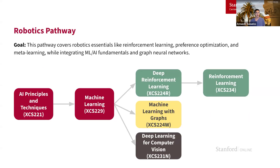Next, we have our robotics pathway — a pathway that specializes in understanding many of the algorithms powering robotics. We always recommend starting by strengthening your AI/ML fundamentals with XCS 221 and XCS 229. But if those are already ingrained, you can jump into the Deep Reinforcement Learning course XCS 224R and our Reinforcement Learning course XCS 234, which is more applied to understand algorithms for robotics and control-based planning. After those, you can supplement your robotics knowledge with graphs and vision — a great combo if you want your robots to see, navigate, and construct graph algorithms to move in more interesting ways.